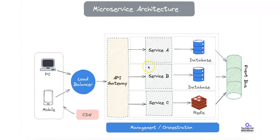Now we have the microservices — Service A, Service B, and Service C. They are independently scalable components, meaning each microservice encapsulates a specific business function. For example, Service A could be a user service, Service B an order service, and Service C a payments service. They communicate through lightweight protocols such as HTTP, REST, gRPC, or even an event bus or message brokers like RabbitMQ or Kafka. Each microservice has its own dedicated database — a database-per-service pattern — ensuring data encapsulation, independent scaling, prevention of cross-service failures, and simplified data ownership.